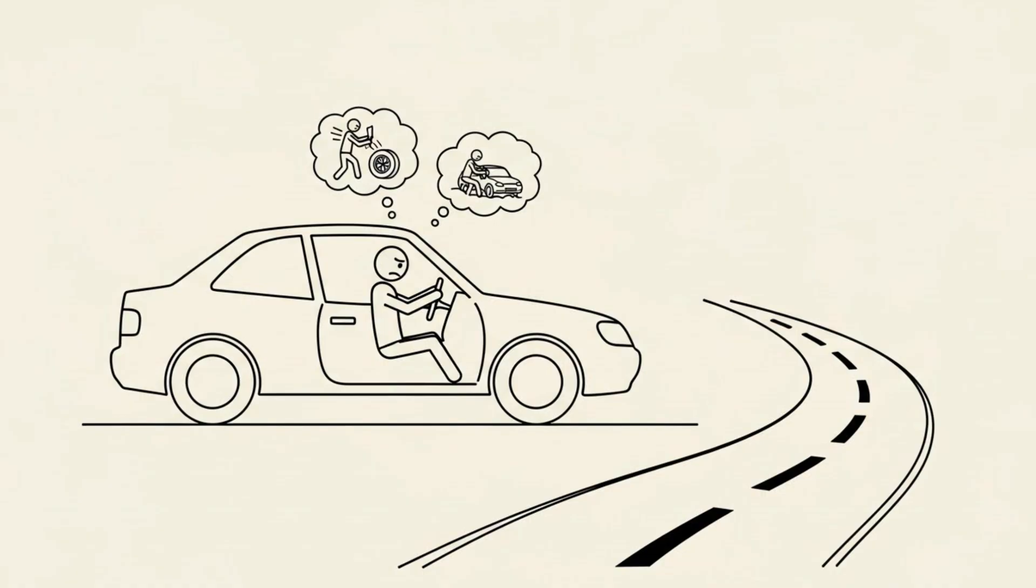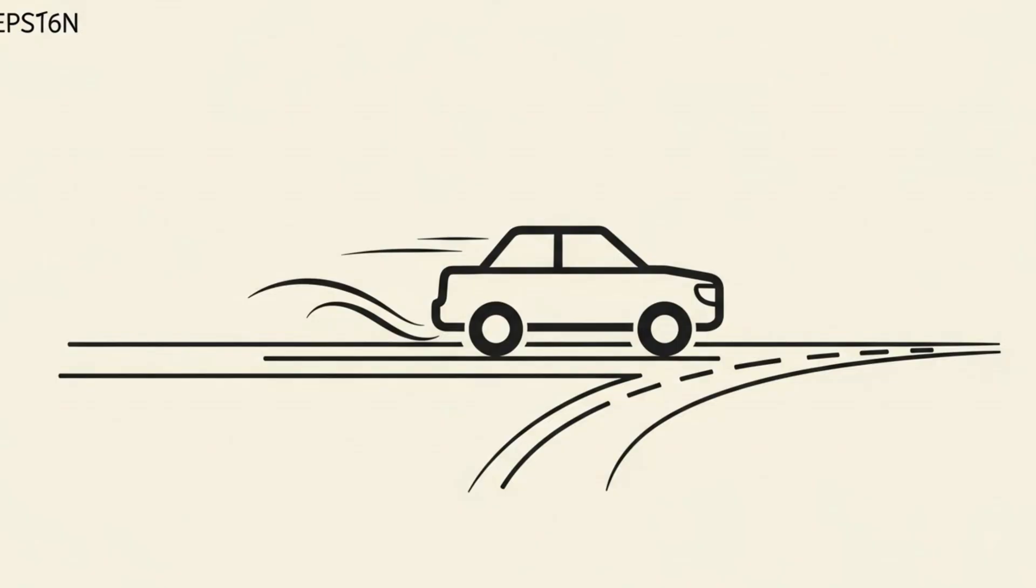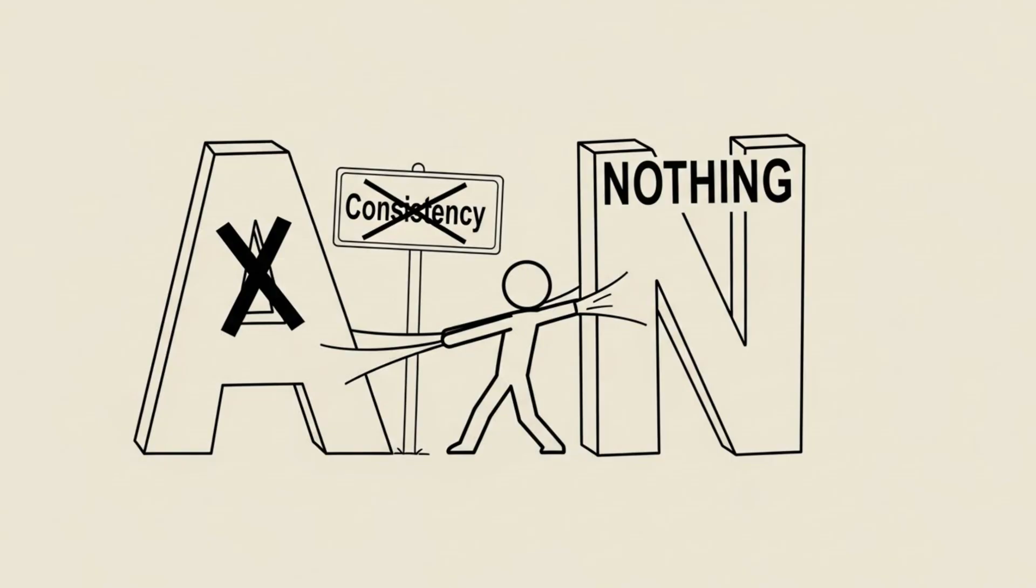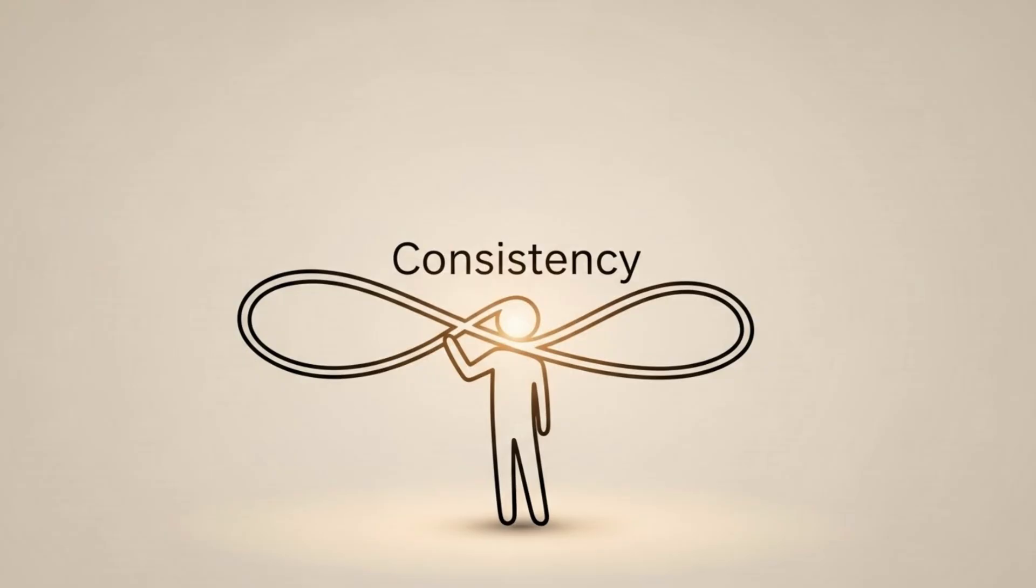Think of it like driving a car. If you miss a turn, you don't slash your other three tires and drive into a ditch. You just make a U-turn. Get back on track immediately. The all-or-nothing mentality is the enemy of consistency. Perfection is not required. Consistency is.